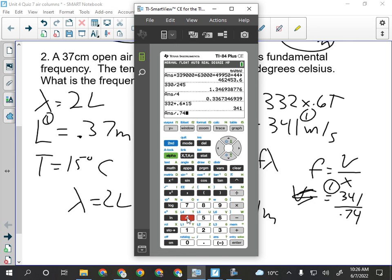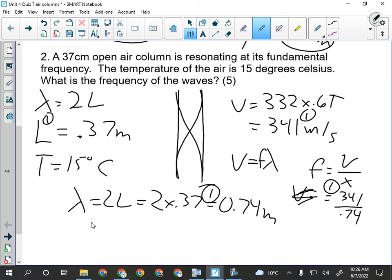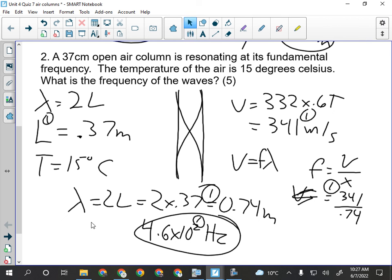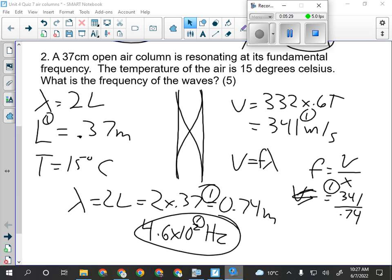And their fifth mark will be for the frequency, which is, we only have two significant digits, 4.6 times 10 to the 2 hertz. Okay, we're their fifth and final mark on that one. Please give them a mark at a 9 at the top. Once you've seen yours, put it on the desk right there in a neat pile. Thank you.